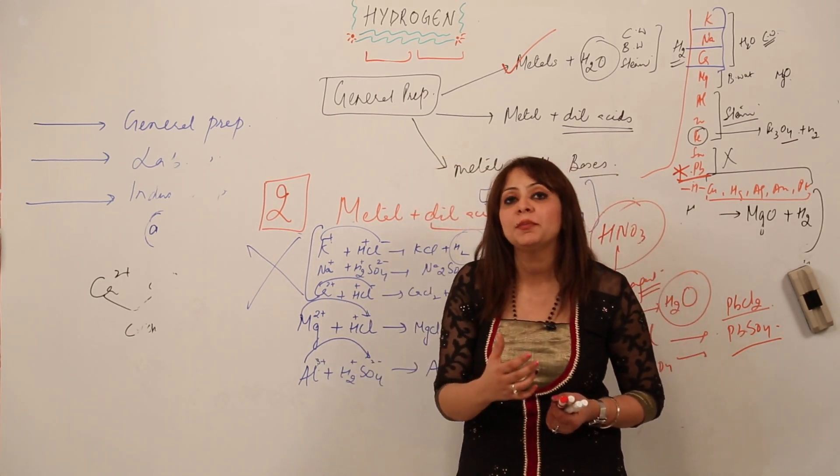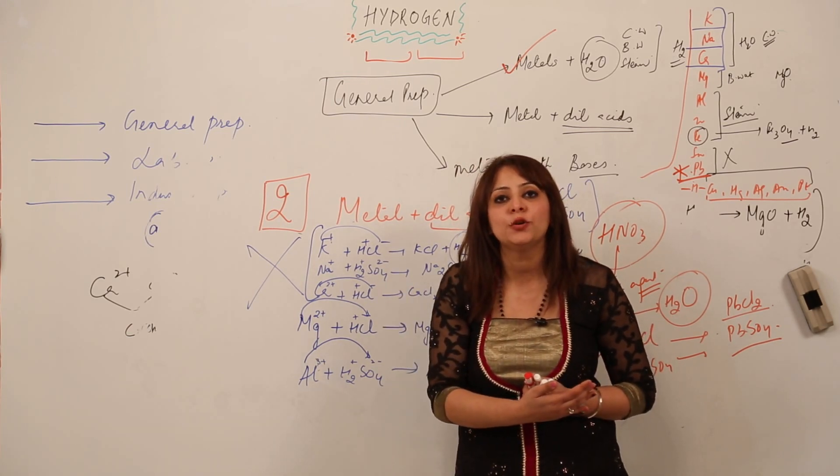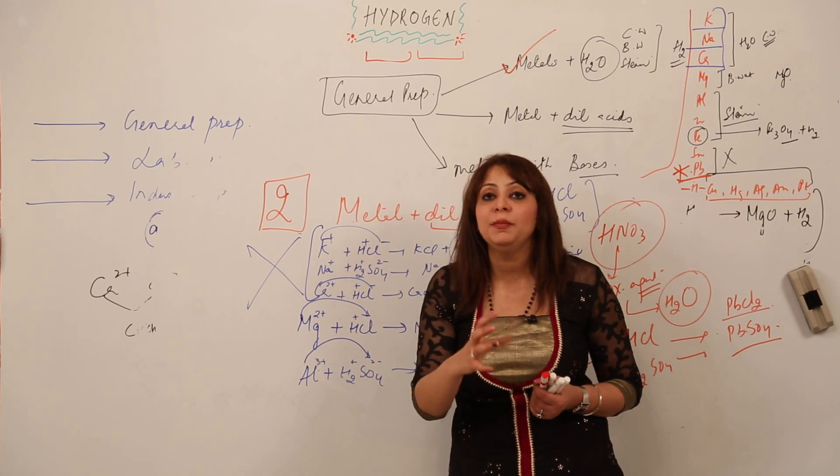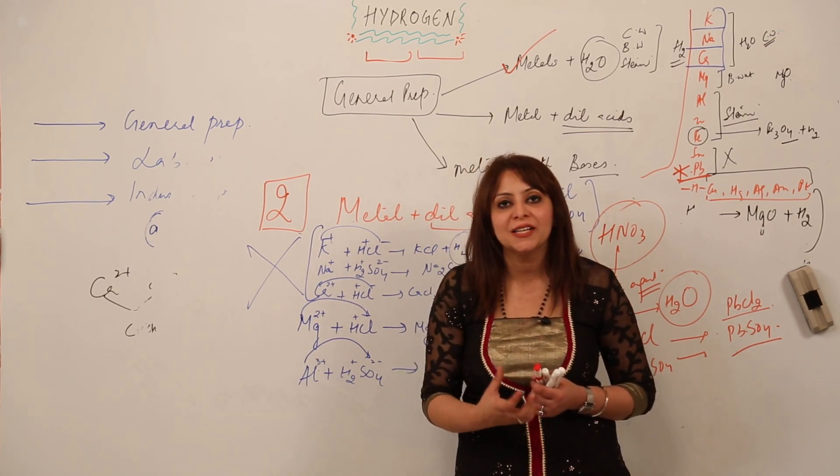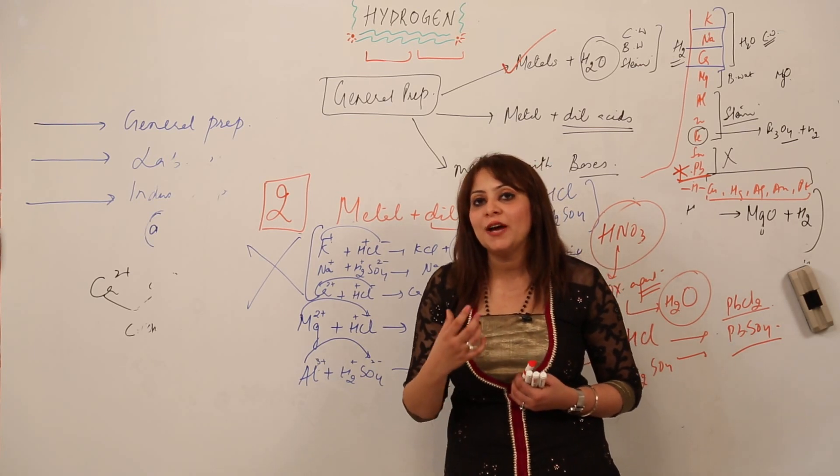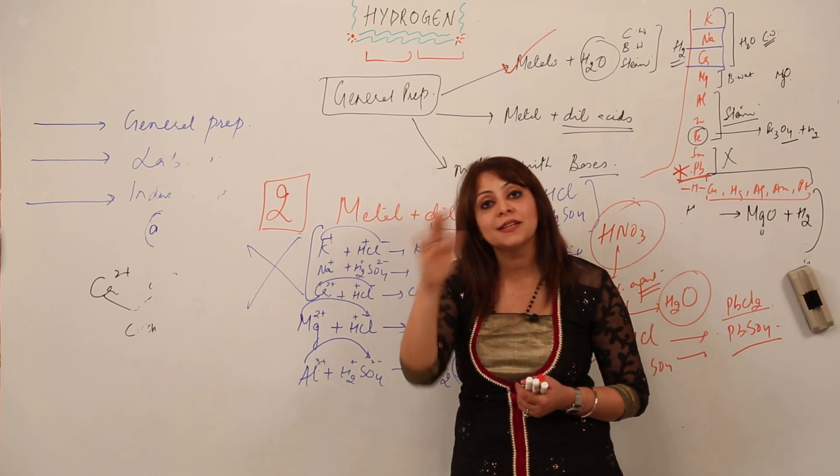What happens is only the surface is being converted into lead chloride and hydrogen, but the rest of the lead remains unreacted. But we need a good amount of hydrogen gas.